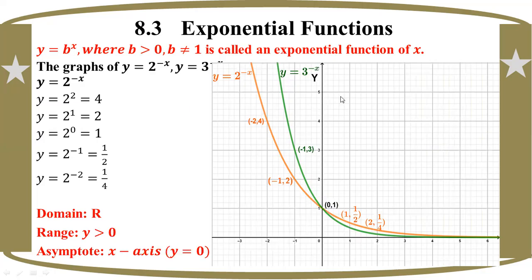1 is equal to 2 power x. Y is equal to 2 power minus x — negative x. As you can see, there is a solid material. Lode h is equal to 0. One is equal to zero. So it is equal to 0.